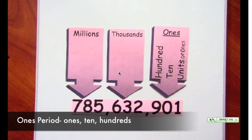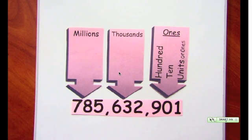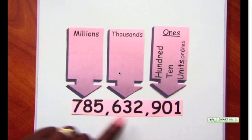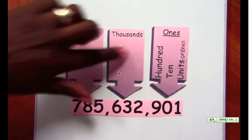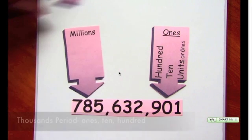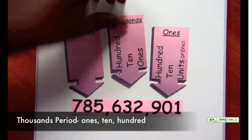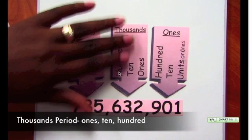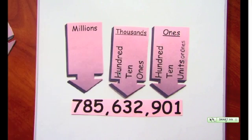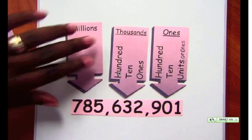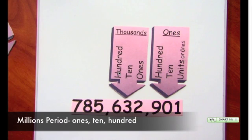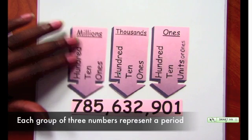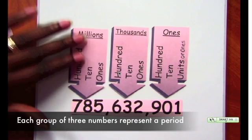The thousands period — 6, 3, and 2 — has three places. And the millions period — 7, 8, and 5 — also has three place values. So each group of three numbers has its own place values.